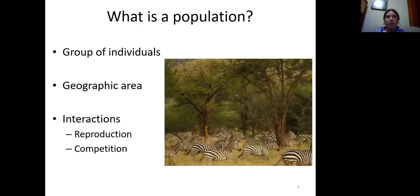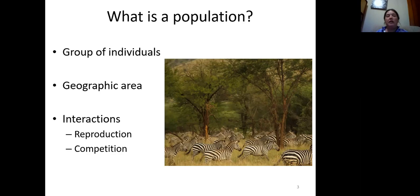Most of you have probably had ecology class, so you should know what a population is. A population is a group of individuals of the same species living in the same area that are interacting, breeding, and competing with each other — a contiguous group. What we're going to be talking about today is how we study populations in mammals and the population ecology component of this class.